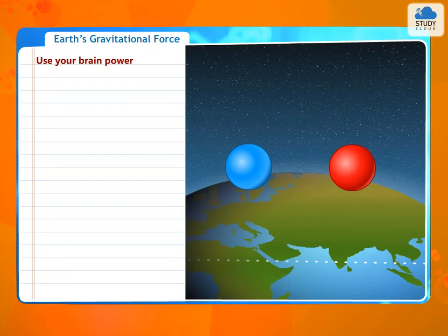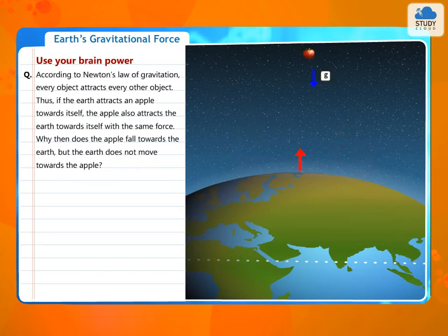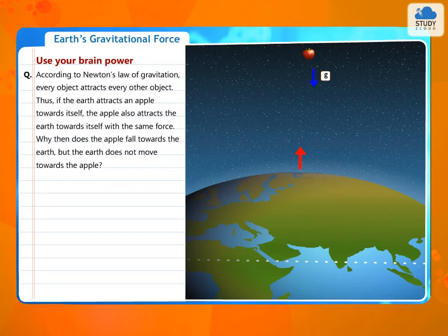Use your brain power. According to Newton's law of gravitation, every object attracts every other object. Thus, if the Earth attracts an apple towards itself, the apple also attracts the Earth towards itself with the same force. Why then does the apple fall towards the Earth, but the Earth does not move towards the apple?